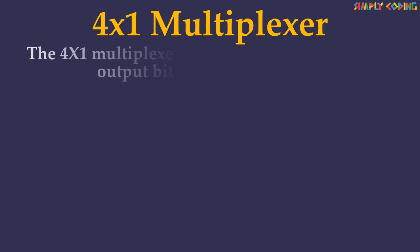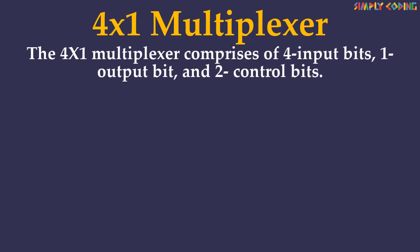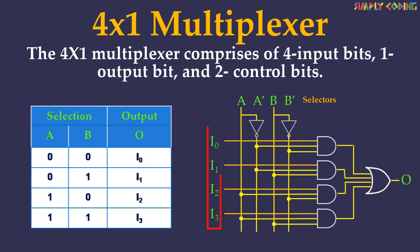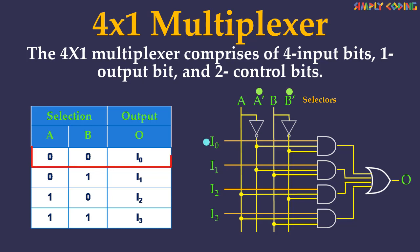The 4-to-1 multiplexer combines 4 input bits, 1 output bit and 2 control bits. The 4 input bits are namely I0, I1, I2 and I3. Only one of the input bits is transmitted to the output. The output O depends upon the value of the control inputs A and B. The control bits AB decide which input data bit should transmit to the output. This figure shows the 4-to-1 multiplexer circuit diagram using AND gates. When the control bit AB is 0, 0 then the first AND gate is enabled and the remaining AND gates are restricted.